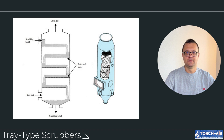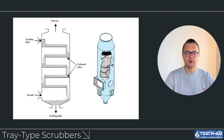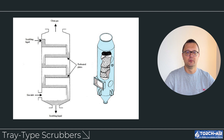In tray-type scrubbers, instead of using nozzles to spray liquid, the gas passes through perforated trays or plates that hold a liquid film. The gas bubbles up through the liquid, creating intense gas-liquid contact. Best for applications requiring high-efficiency gas absorption without the use of nozzles. Trays provide consistent gas-liquid interaction without requiring high-pressure pumps or nozzle maintenance, and are particularly useful in chemical scrubbers dealing with gases like ammonia or sulfur oxides. Consideration: tray scrubbers can be more expensive to install and maintain due to the complexity of the tray system.